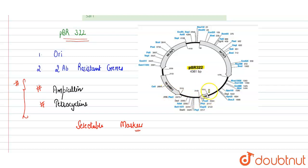This is the structure of pBR322, which has 4361 base pairs. It contains the origin of replication and two antibiotic resistance genes: apr, that is the ampicillin resistance gene, and tet, that is the tetracycline resistance gene. Different restriction sites are present, and on that basis it can act as a selectable marker.